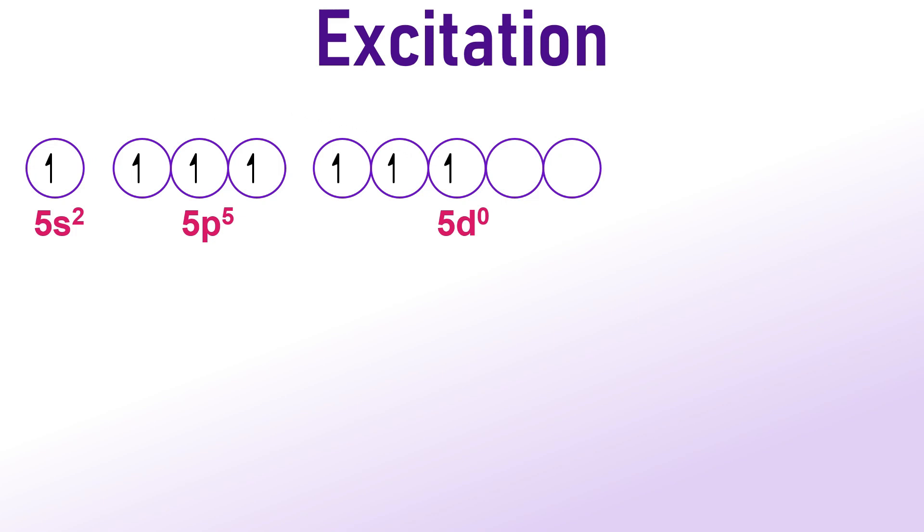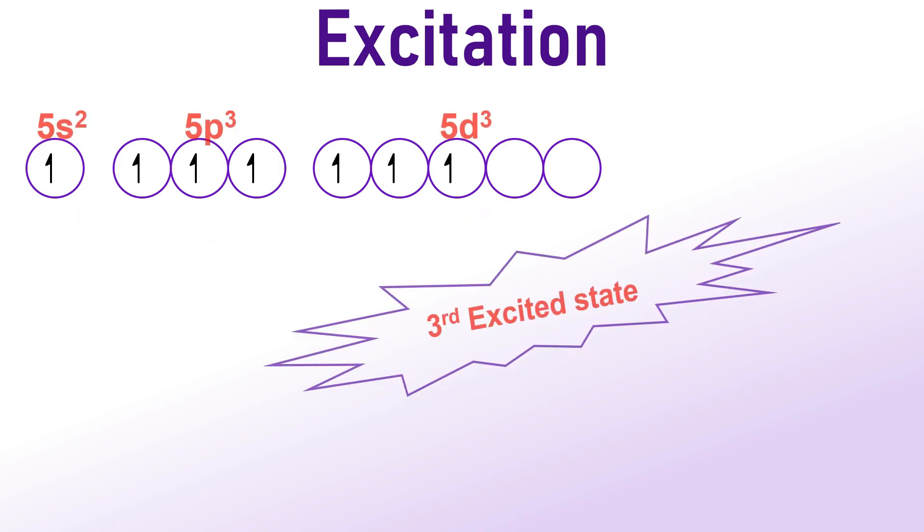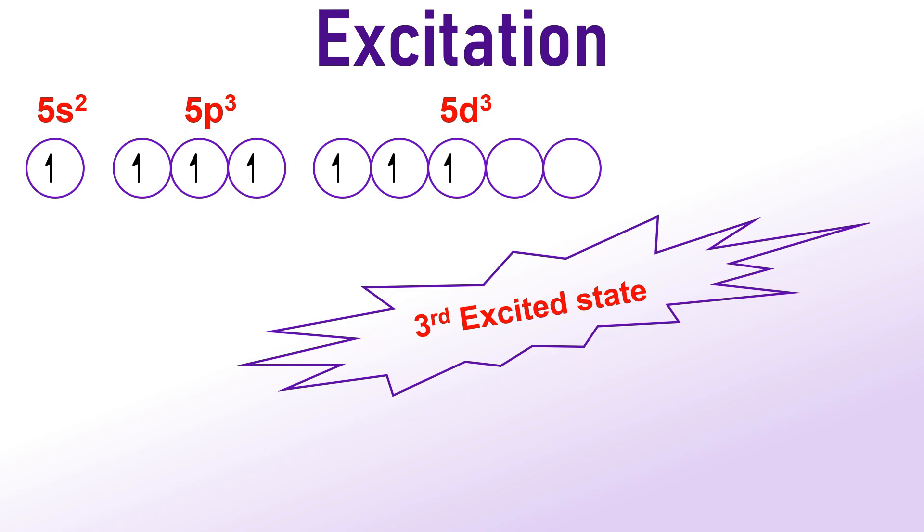This results in the outer electronic configuration of 5s1, 5p3, 5d3 which is known as the third excited state of iodine. In this state, there are 7 unpaired electrons enabling iodine atom to form 7 bonds. However, before forming these bonds, the iodine atom undergoes sp3d3 hybridization.